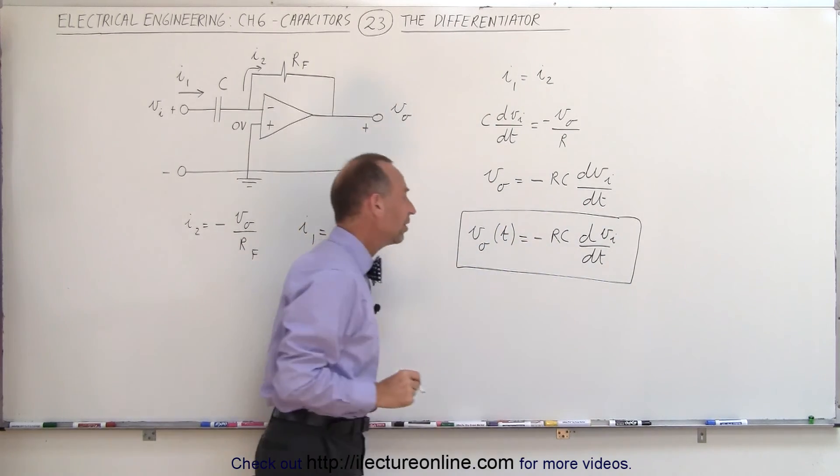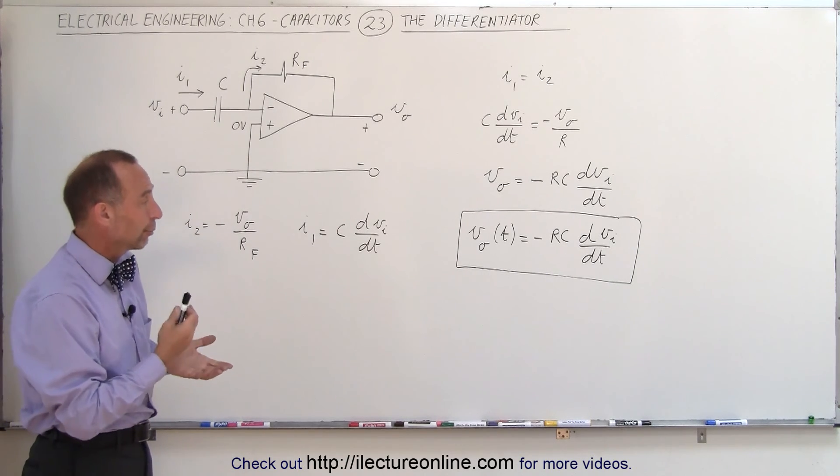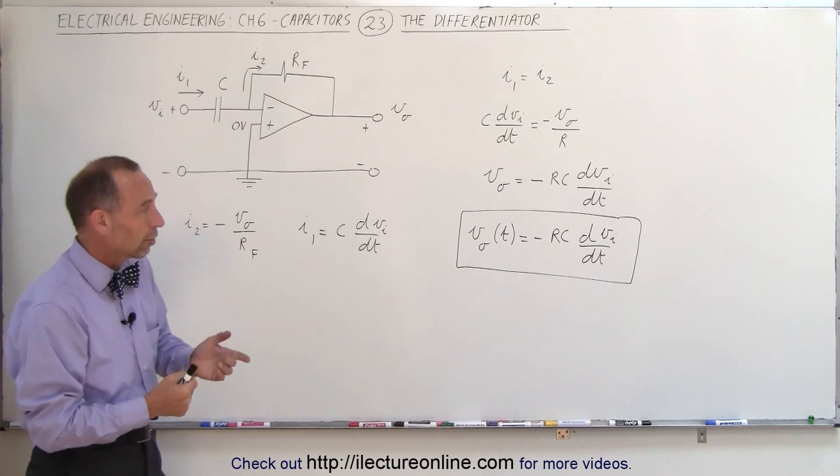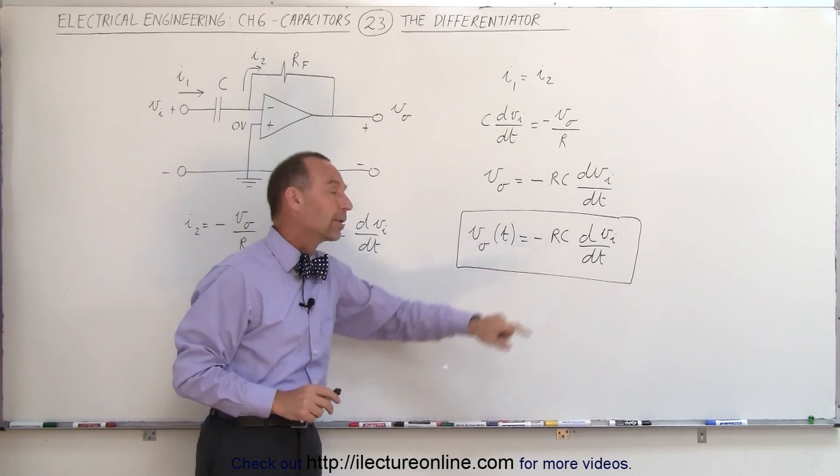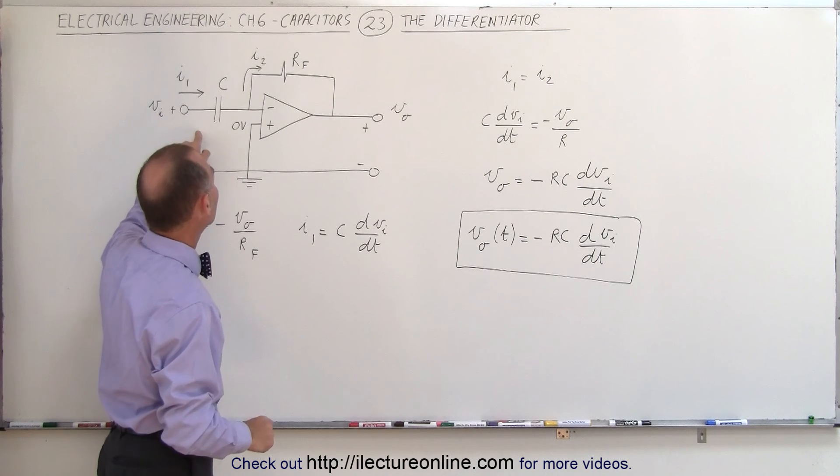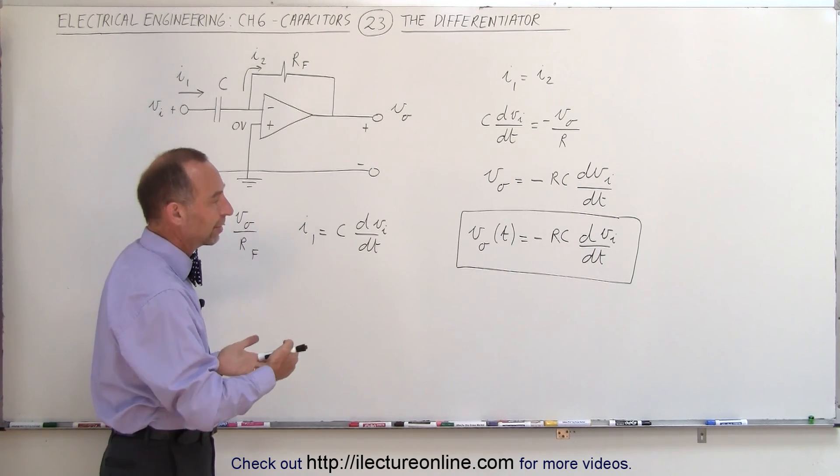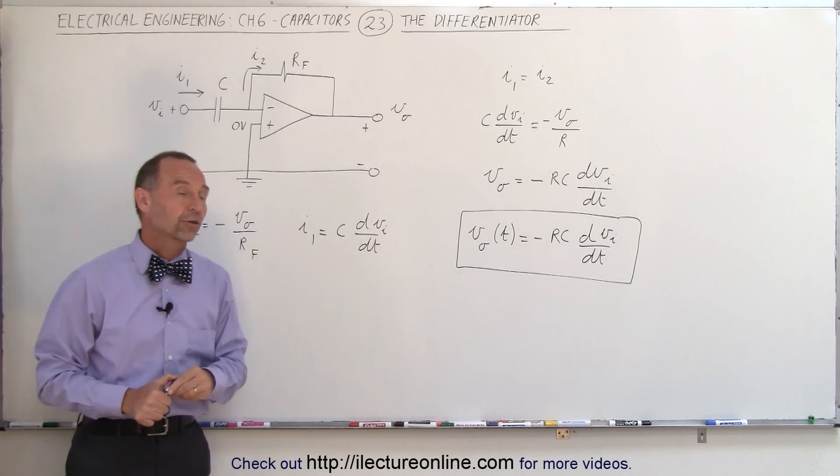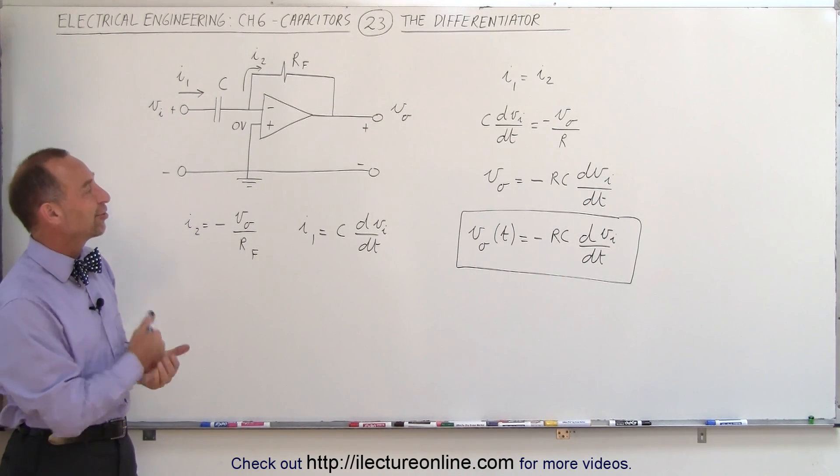And there you can see that, in this particular case, the output voltage is simply the derivative, or it's proportional to the derivative of the input voltage. Of course, it depends on the time constant. Again, if R and C are large quantities, then of course, that's a large time constant. It takes a long time for the capacitor to charge. And that's how we build a differentiator circuit.